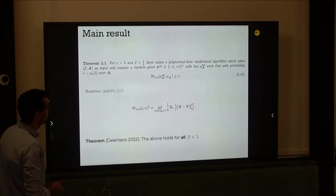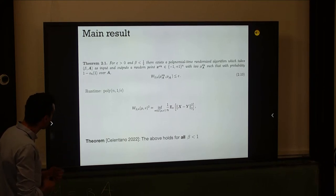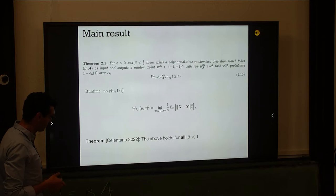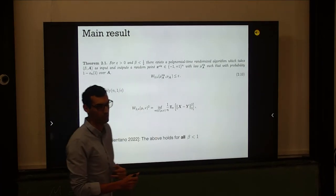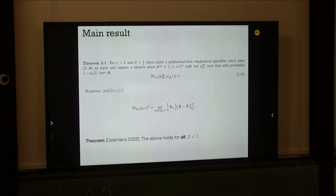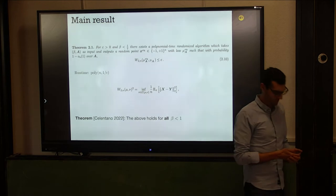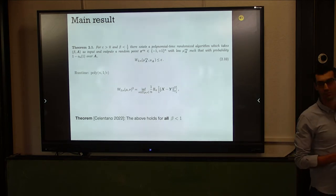After we published this paper, we talked to a postdoc at Berkeley, Michael Celentano, and we told him where our proof breaks. He knew how to fix it for all beta smaller than one. The result holds for all beta smaller than one using the same algorithm — just the analysis is improved.